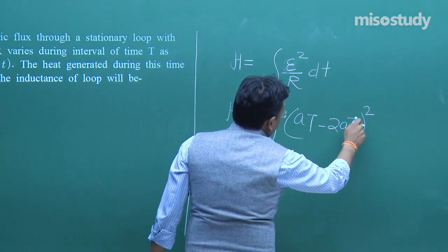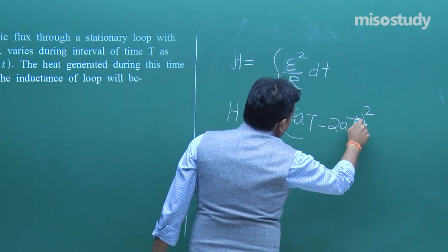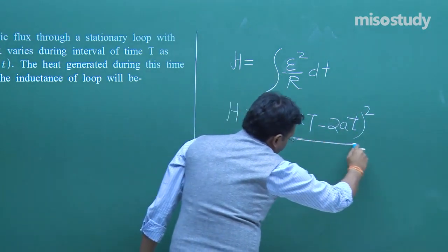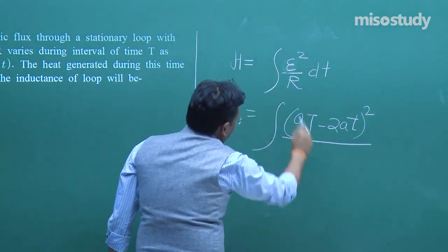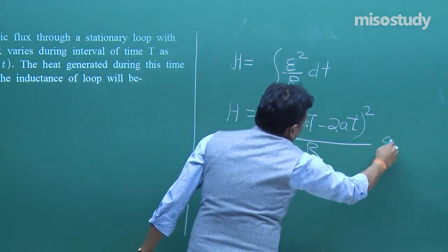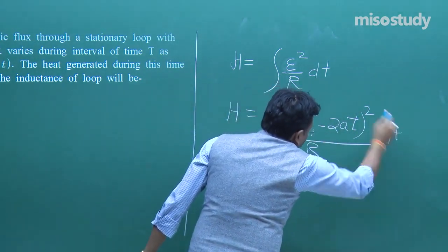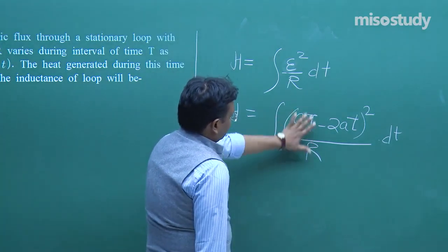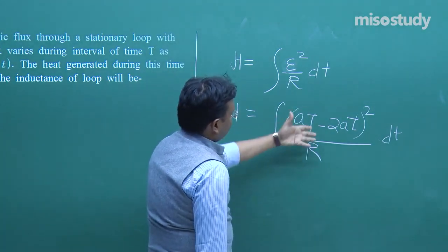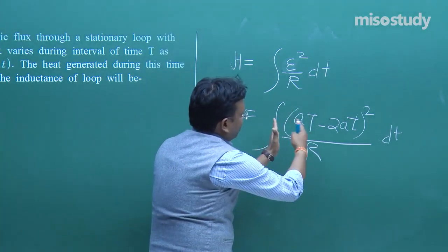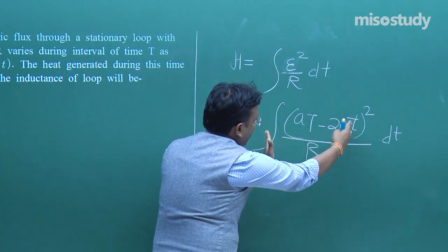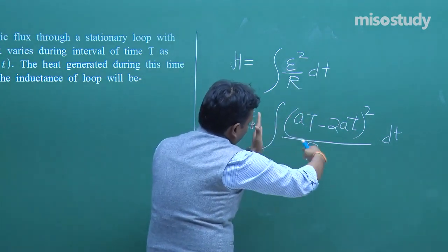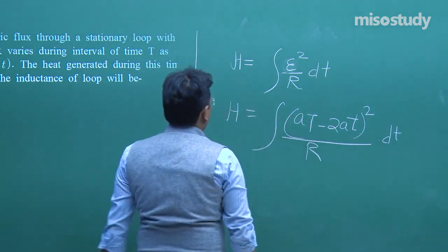Expanding (AT − 2At)² = A²T² − 4A²Tt + 4A²t². We have three terms. The resistance R is constant so it comes outside the integral. Integrate each term with respect to t from 0 to T.